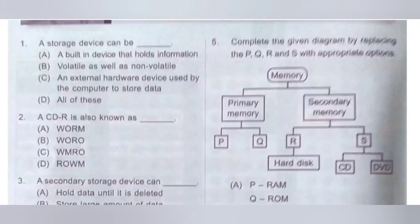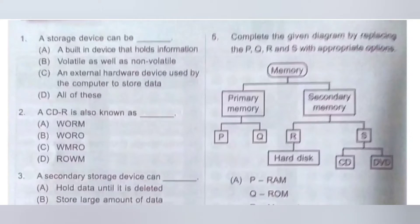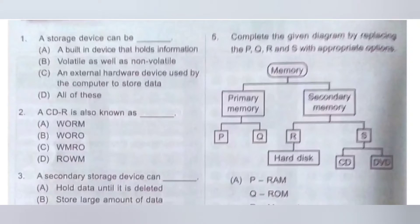Second question. A CD-R is also known as: A) WORM; B) WORO; C) WMRO; D) ROWM. WORM means write once, read many. In computer storage media, write once read many is a data storage technology that allows information to be written to a disk a single time and read many times — it prevents the drive from erasing the data. So a CD-R is also known as WORM. Option A is the correct answer.